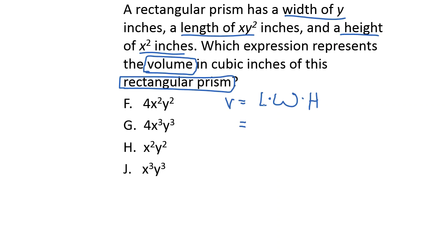If we know the length, the width, and the height, we can find the volume, and luckily we do. The length is xy squared, the width is y, and the height is x squared. So we write xy squared times y times x squared. Our exponent rules say that if we multiply two of the same bases, we add the exponents.